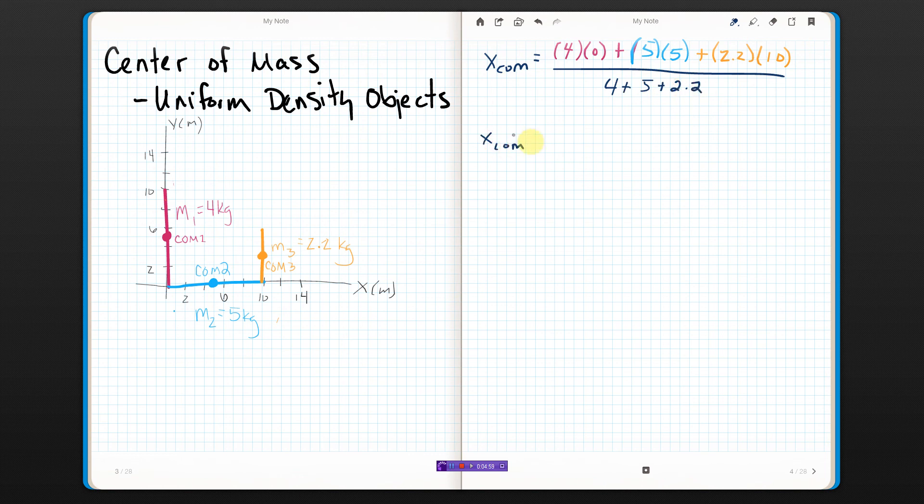So the x-coordinate of the center of mass of this bent staple thing, that's 0. I've got 25 plus 2.2 times 10 is 22. Divided by 4 plus 5 is 9, plus 2 would be 11, and then 0.2. So 11.2. And if I do all that out, I get 4.196. I've got two sig figs here. So that would end up being 4.20 if I round it properly. Meters.